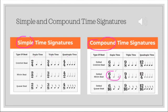For example, if I have six-four, that is a compound duple time signature. If I have four-eight, that's a simple quadruple time signature.